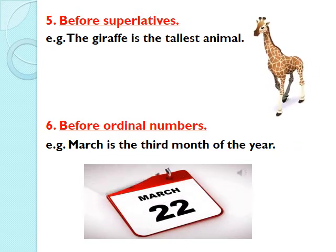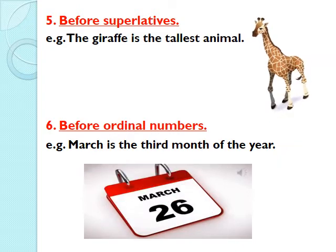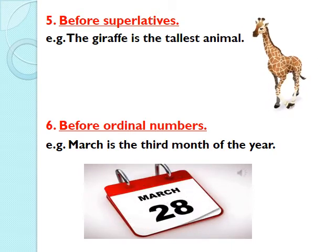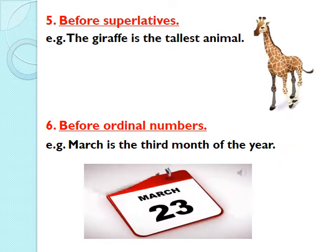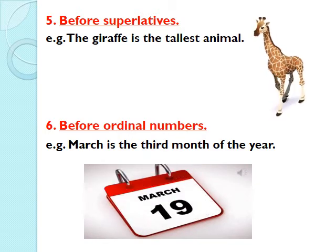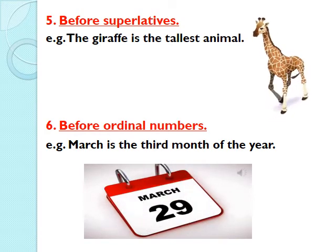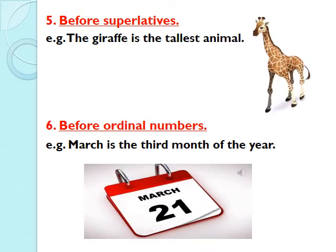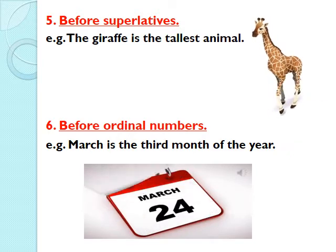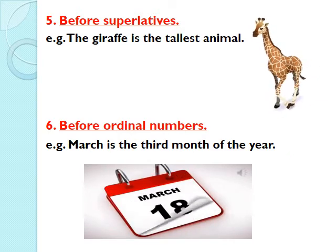We write article THE before ordinal numbers — first, second, third, fourth, fifth, and so on. For example: 'March is the third month of the year.' In this sentence, the ordinal number is third, so we have put article THE before it.